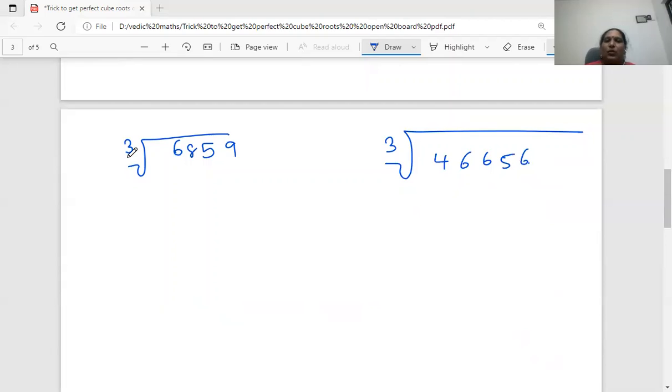So here, cube root of 6859, we have to make them into every 3 digits, starting from the right side, you have to make a group. 859 I am making a group. Only I am left out with 6, so I will write 2 zeros and make this also as another group. So the cube root of this number, if you are making groups, we got only 2 groups. So then definitely, we are going to have 2 digits in our answer. So this is a 1's place.